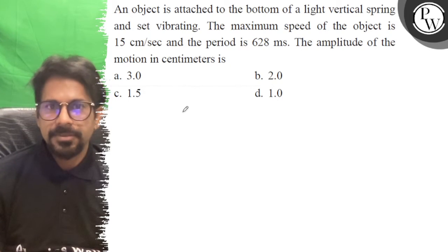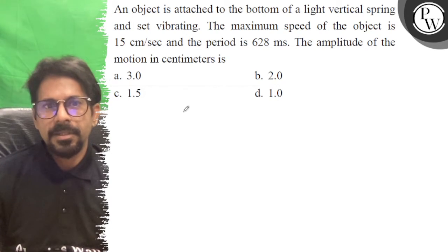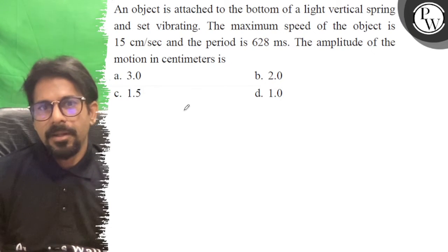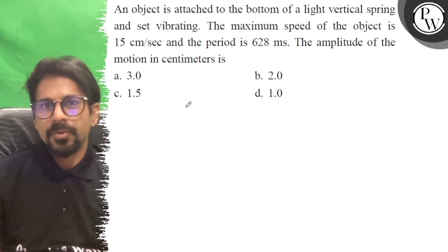Hello, it is the question. An object is attached to the bottom of a light vertical spring set vibrating. The maximum speed of the object is 15 cm/sec and the period is 628 ms. The amplitude of the motion in centimeters is...